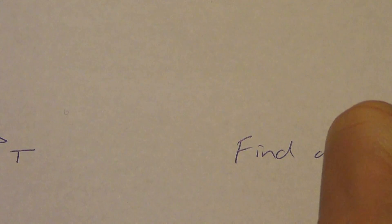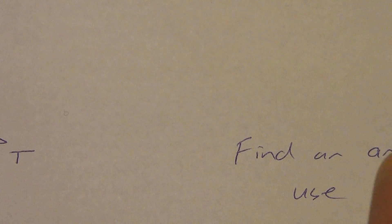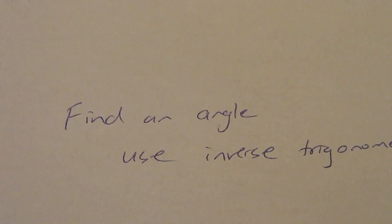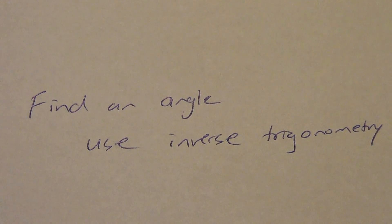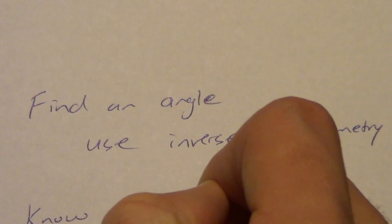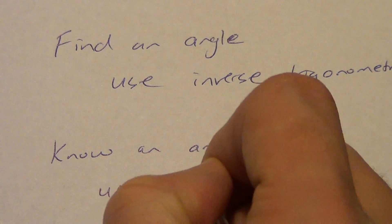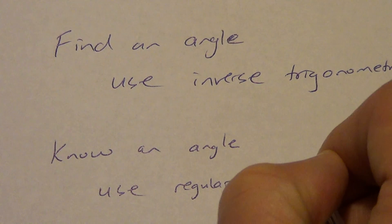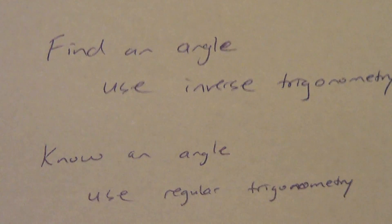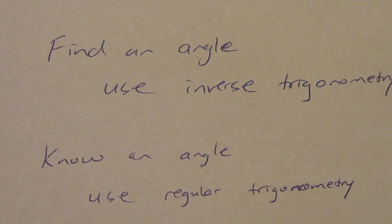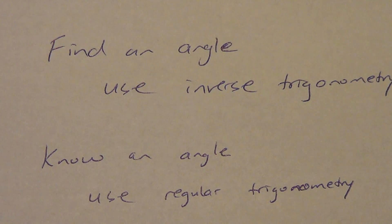Review of the lesson: if you are trying to find an angle, use inverse trigonometry — unless you can find that angle using the triangle sum theorem when you were given one angle to begin with. Don't use the triangle sum theorem when you had to find an angle yourself to start with. If you know an angle other than the right angle, use regular trigonometry as learned in Lessons 7.5 and 7.6. This is Lesson 7.7 and we're done with Chapter 7. Be ready for a video quiz, a regular quiz over Lessons 4, 5, 6, and 7, and a chapter test coming up.